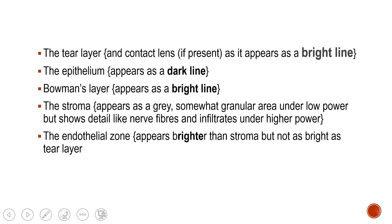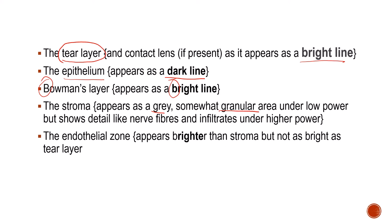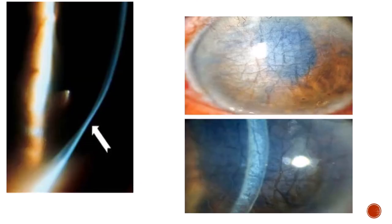In optical section you have the tear film layer as the most anterior, appearing bright in color. Then the epithelium looks slightly darker. Then Bowman's layer appears as a bright line again. The stroma appears grayish and somewhat granular under low power. To study the stroma better, parallel pipe illumination is preferred over the optical section. The endothelial zone can also be seen, appearing brighter than the stroma, though the tear film is the most hyper-reflective and brightest of all.